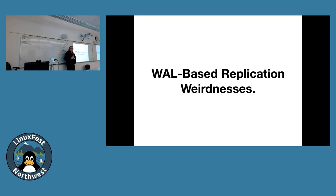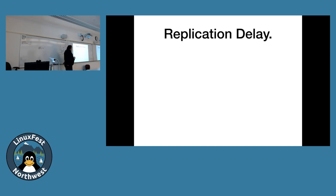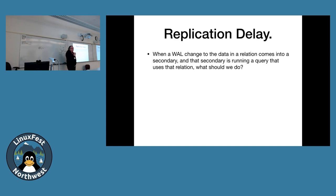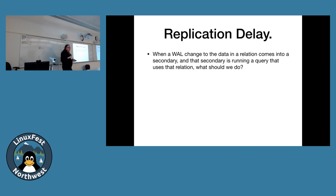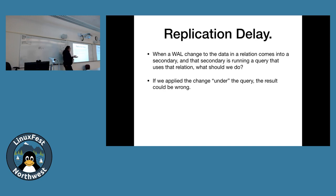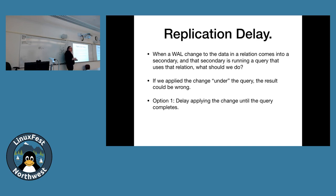Streaming replication is the primary way of having a failover machine in Postgres today — really no reason to do it differently. It does have some weirdness: replication conflicts. These are different from replication lag. The problem is WAL changes go in at a binary level and effectively pound the disk directly. When a WAL change arrives on the secondary but the secondary is running a query on that same table, you have two choices: delay applying the change until the query completes, or cancel the query.